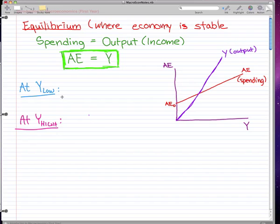To keep this video relatively short, I already wrote out what I want you to know. We're talking about equilibrium, where the economy is stable. What I want you to know is that spending equals output or income. That is what happens at equilibrium. Here I have this graph, and I'll explain what it really means.